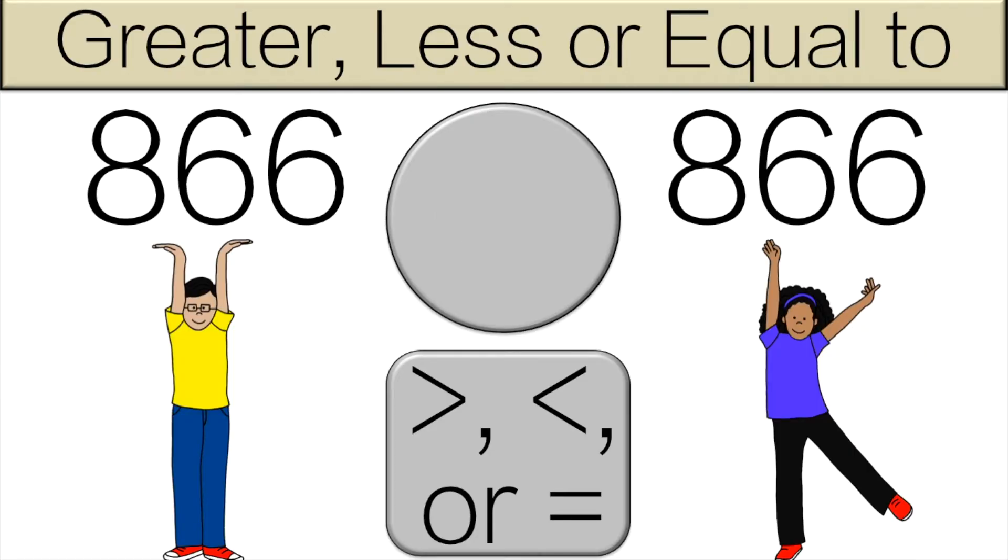Which number is greater? The numbers are equal, so you'll have to do both poses. We'll start with the I pose for 10 seconds, and then we'll switch to the K pose for 10 seconds.